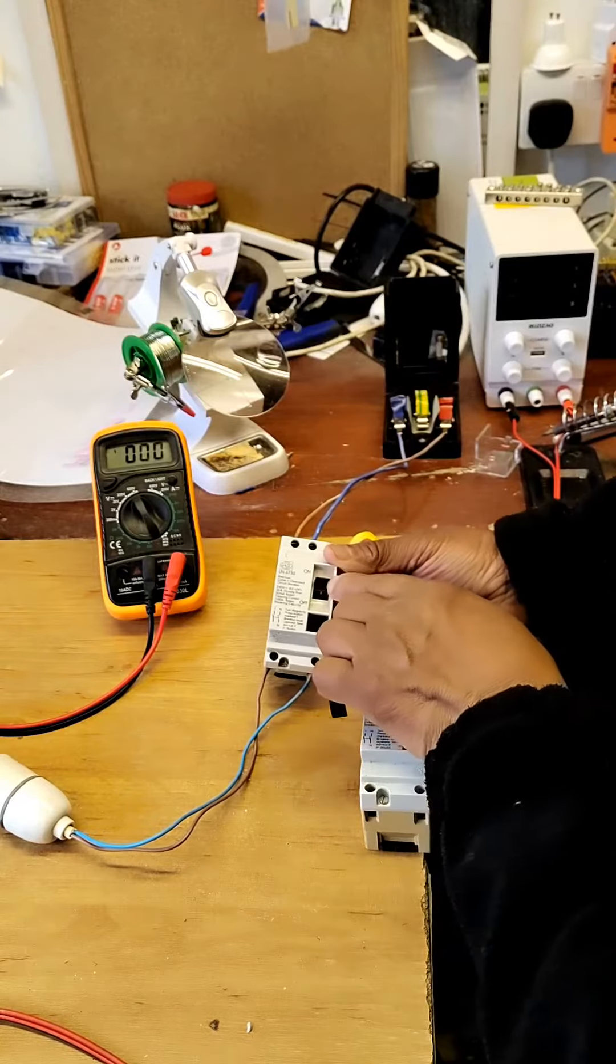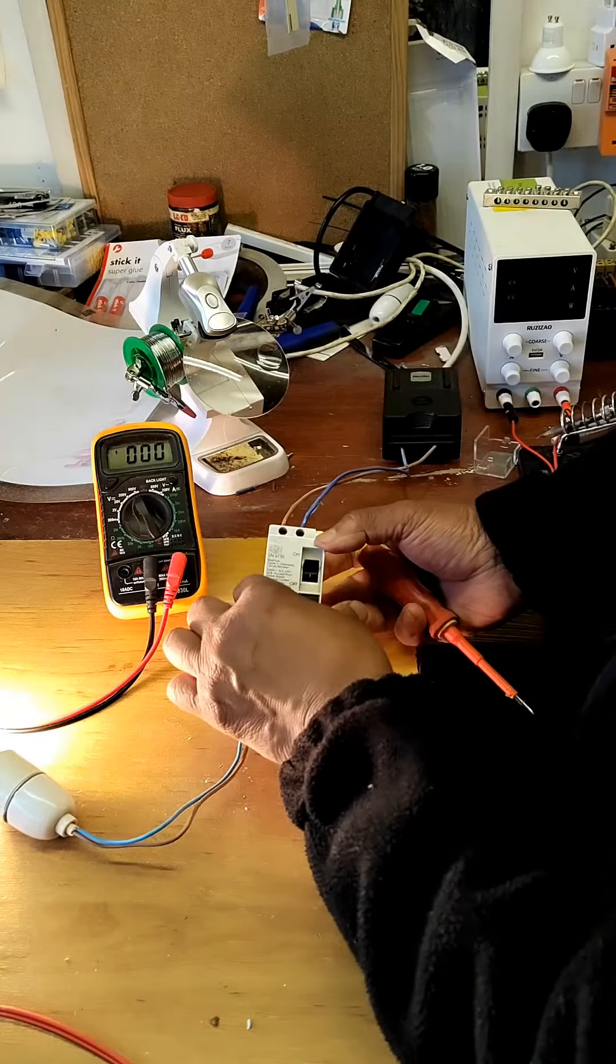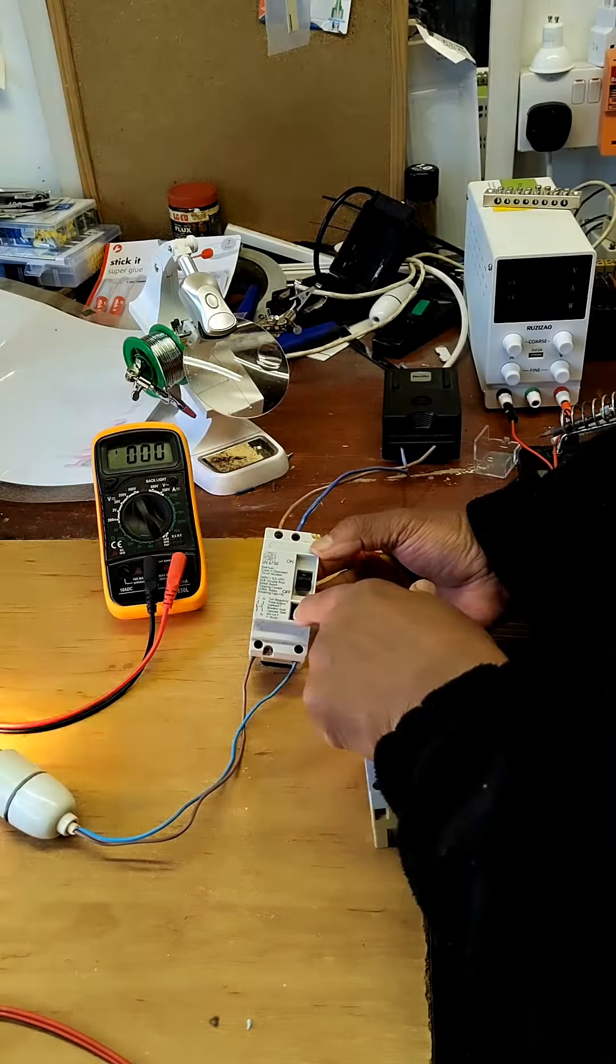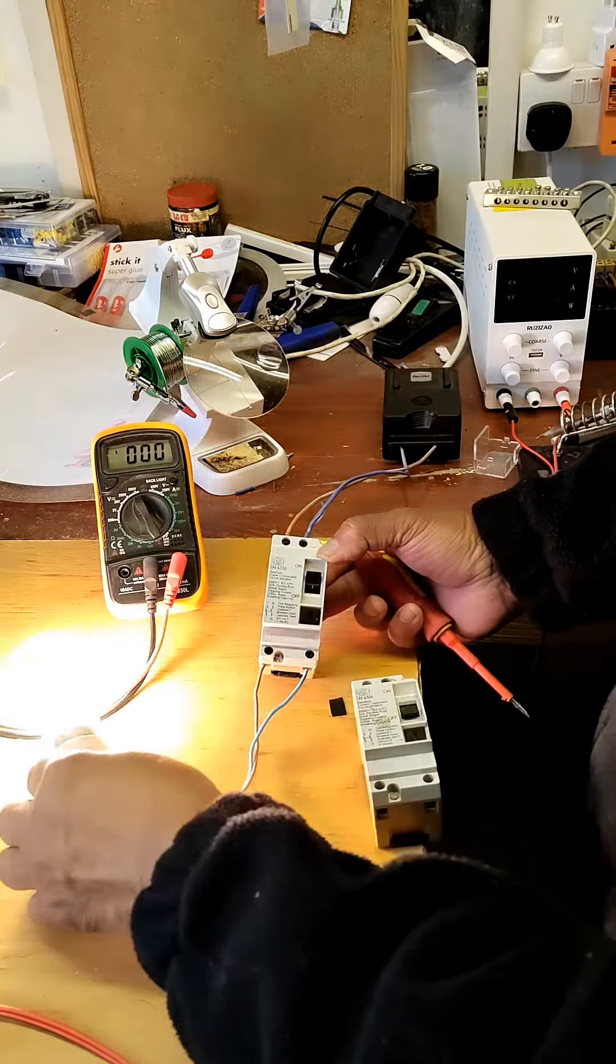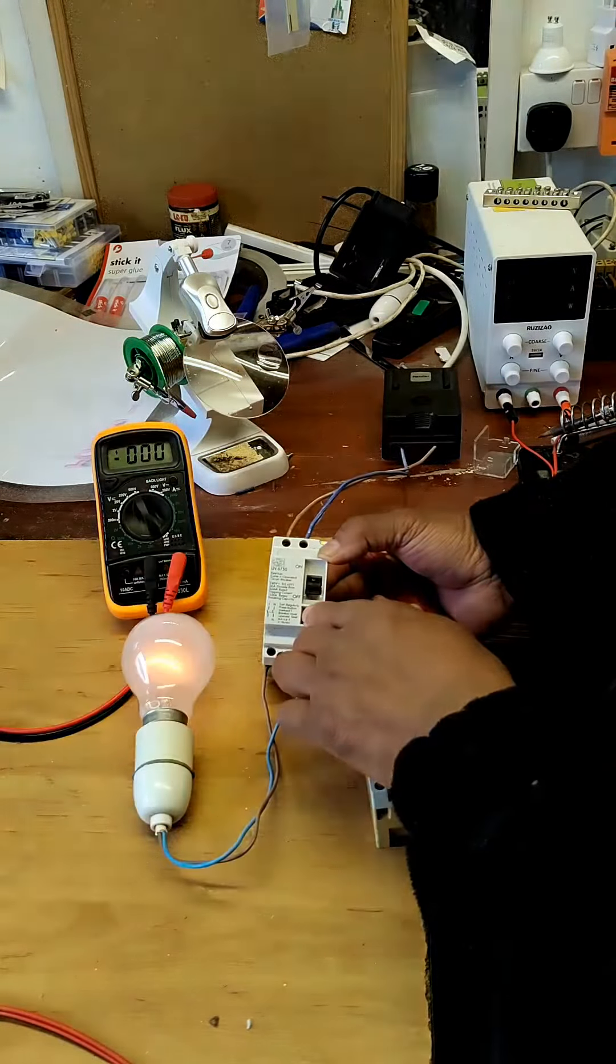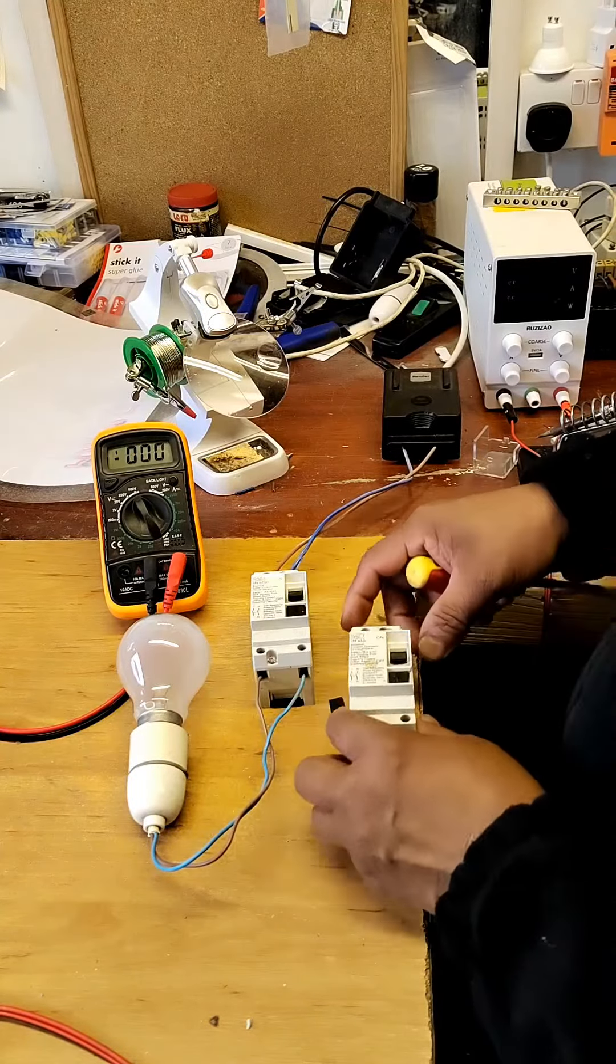This is what we do, we put a bulb from the output and see if the breaker actually works. So this is a safety switch and I'm going to touch the wire and it breaks out.